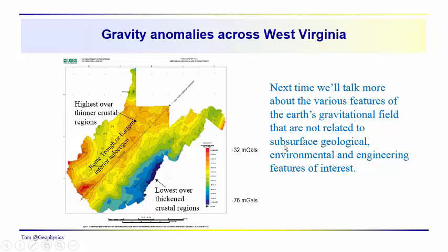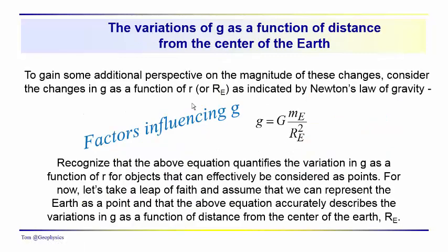We'll talk more about these features next time, but for now, let's talk about the variations of G that are a function of distance from the center of the Earth. As you might imagine, just thinking back to Newton's universal law of gravitation, the further away we are from the center of the Earth, if RCB increases, then the acceleration due to gravity is going to decrease.